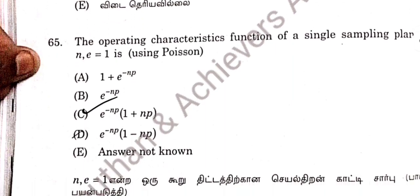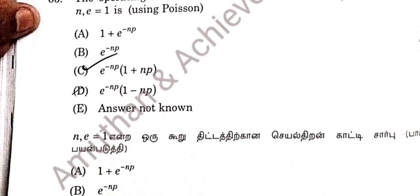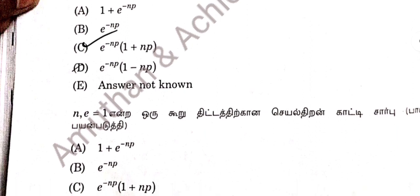Question 65: The operating characteristic function of a Poisson single sampling plan is Poisson e power minus NP into 1 plus NP. 65 option C.